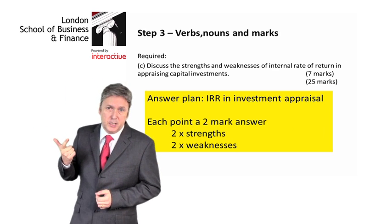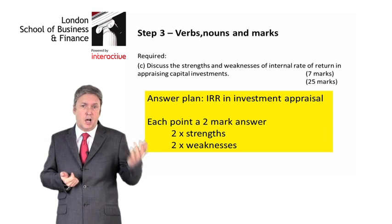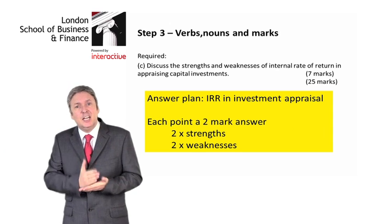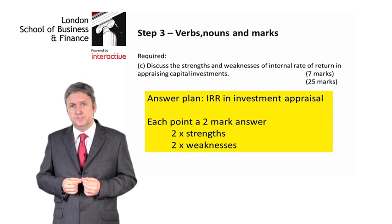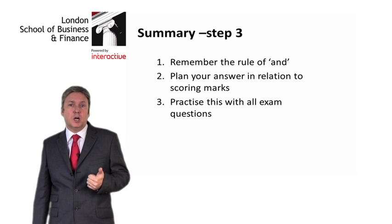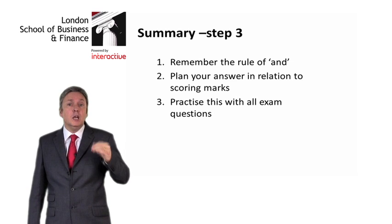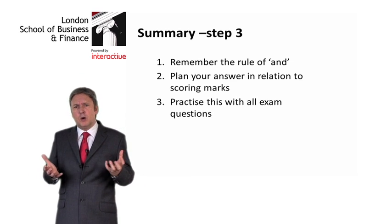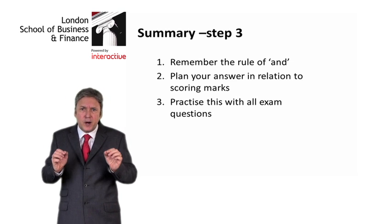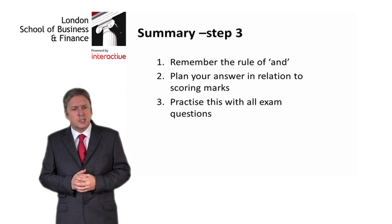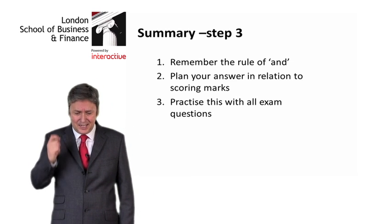Two strengths and two weaknesses. If we do that — two strengths and two weaknesses with regard to IRR — we're going to get seven or eight marks quite easily. In summary: first, remember the rule of AND — when we have AND in a requirement, it's not one requirement but two. Second, plan your answer in relation to scoring marks; break up the question into two and three-mark components that are easier to answer. Third, make sure you practice this again and again with all exams.